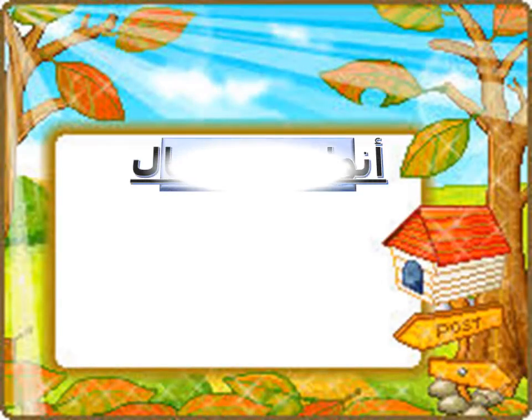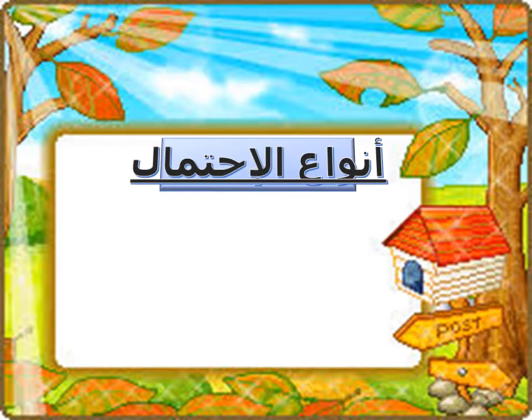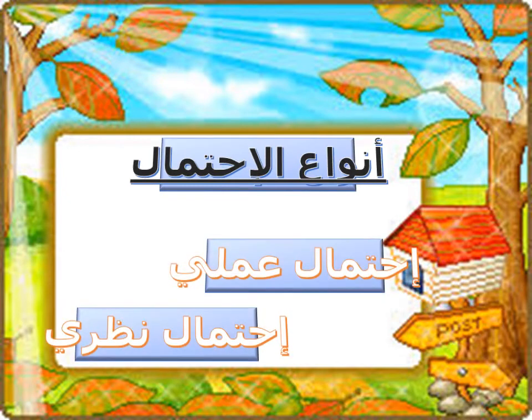تعالوا نشوف مع بعض أنواع الاحتمال. عندي نوعين من الاحتمال: احتمال عملي واحتمال نظري. وهنبدأ نشوف كل واحد منهم دلوقتي لوحده.